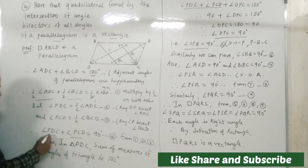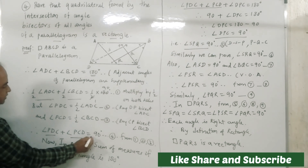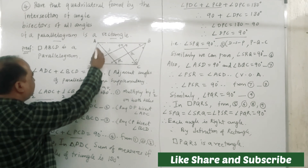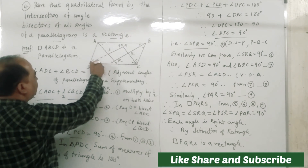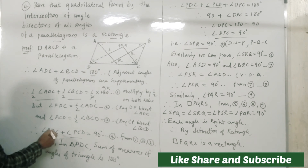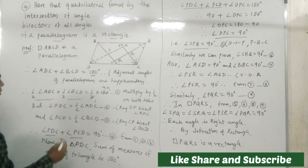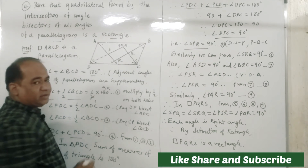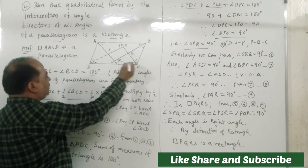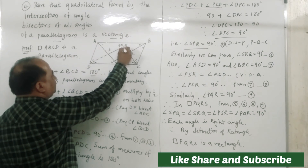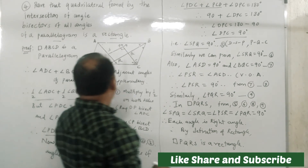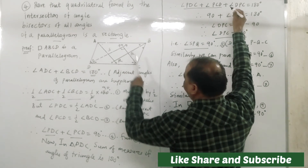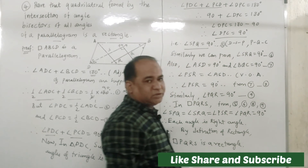We get angle PDC plus angle PCD equals 90 degrees — from equations one, two, and three. Now in triangle PDC, we know that the sum of the measures of angles of a triangle is 180 degrees. So angle PDC plus angle PCD plus angle DPC equals 180 degrees — sum of measures of angles of the triangle.